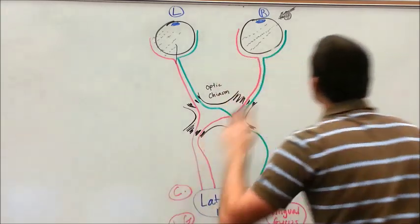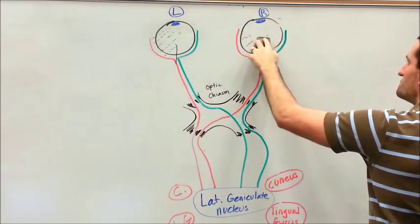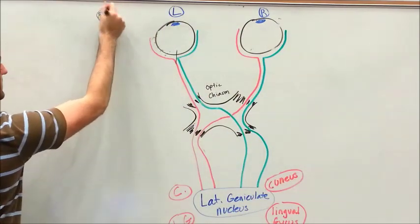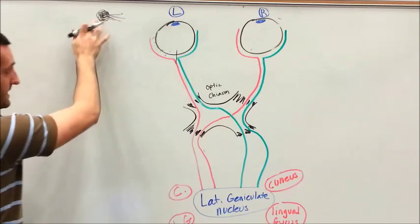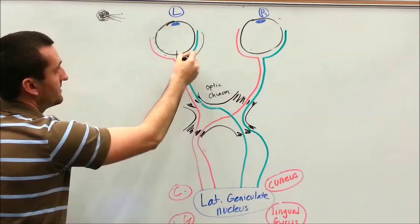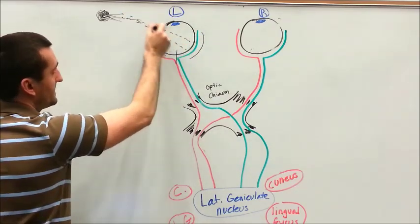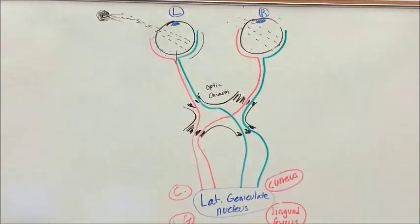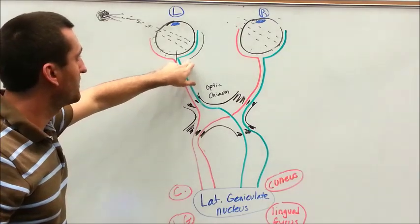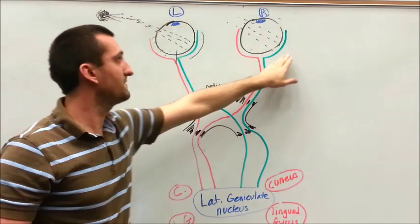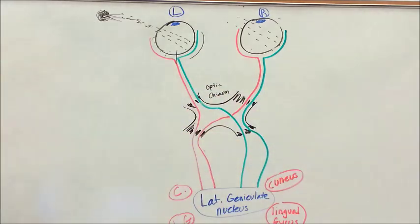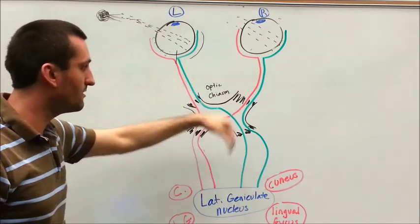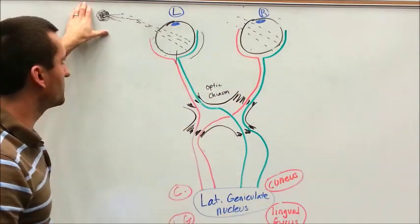Note that some fibers do not cross and some fibers do cross. Light from the right side is going to be transmitted to the left side of the brain. Likewise, you could have a light source over here on the left — it's going to activate the right side of the left eye and the right side of the right eye. The left fibers are going to cross over and the fibers on the right side will not. This is important because it helps your brain organize where the light is coming from, and that's ultimately why you have this optic chiasm with some crossing and some fibers that don't — it's to localize that light source.